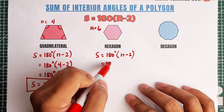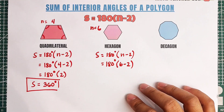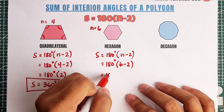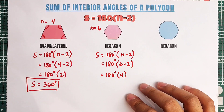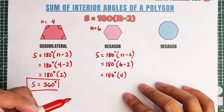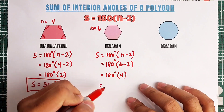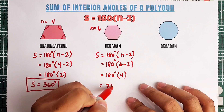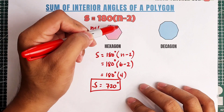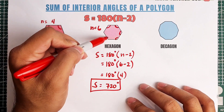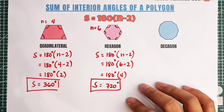Let's plug in N, which is 6. That would be 180 degrees times (6 minus 2). Simplify — 6 minus 2 is 4, so we have 180 degrees times 4. The correct answer is 720 degrees, meaning the sum of all six interior angles of a regular hexagon is equal to 720 degrees.